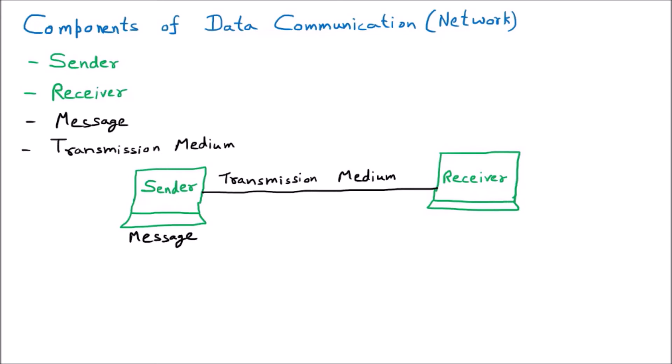Through the transmission medium, the message is going to be sent. It is not only about sending a message — there should be some standard set between the sender and the receiver through which they are working. For example, they might agree to send an email with a password, or use a specific technology. Those rules are called protocols. Protocols are the standard rules available with both the sender and receiver. The next component is the protocol, which means the set of rules.